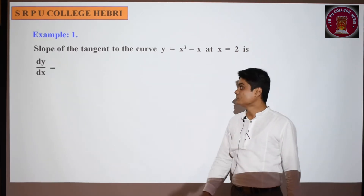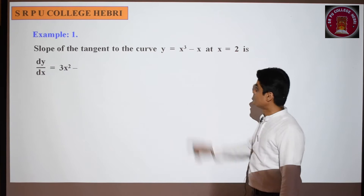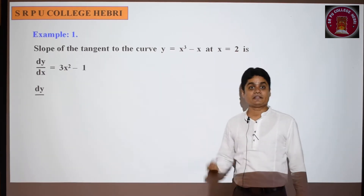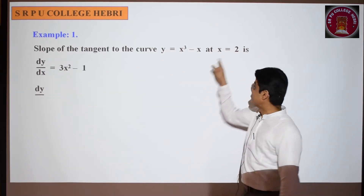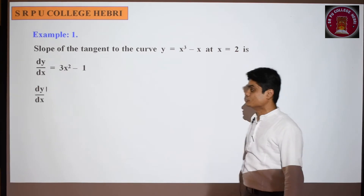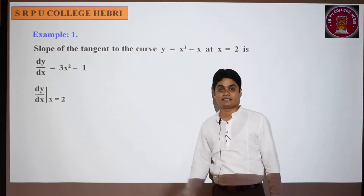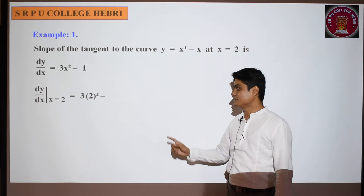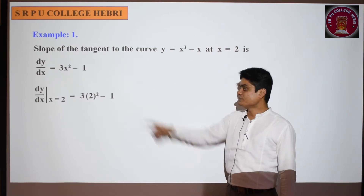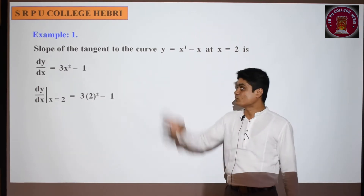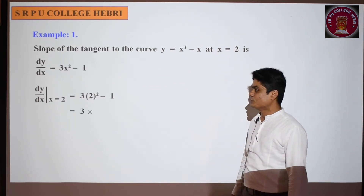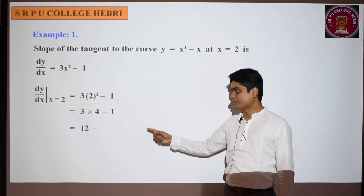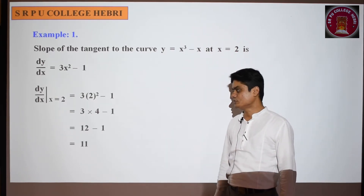We should differentiate this. The differentiation of y = x³ - x is 3x² - 1. Now, differentiation at the given point: x = 2. So dy/dx at x = 2 is 3 × 2² - 1. Simplifying: 3 × 4 = 12, minus 1, which equals 11.